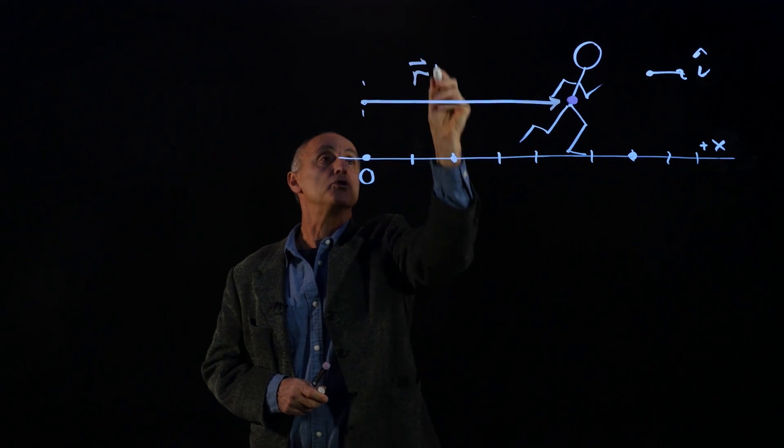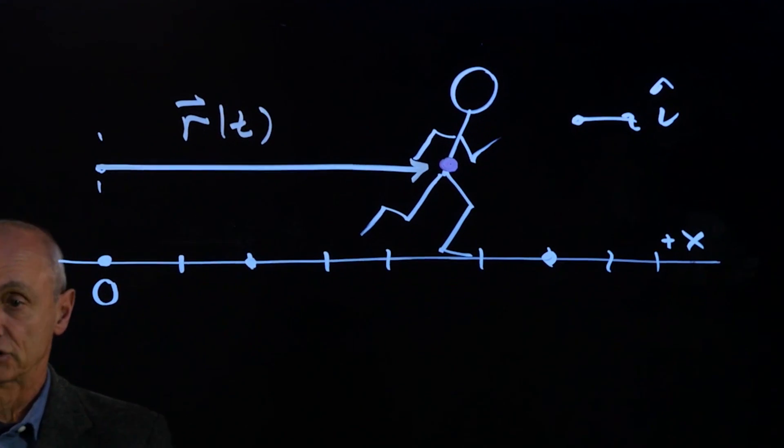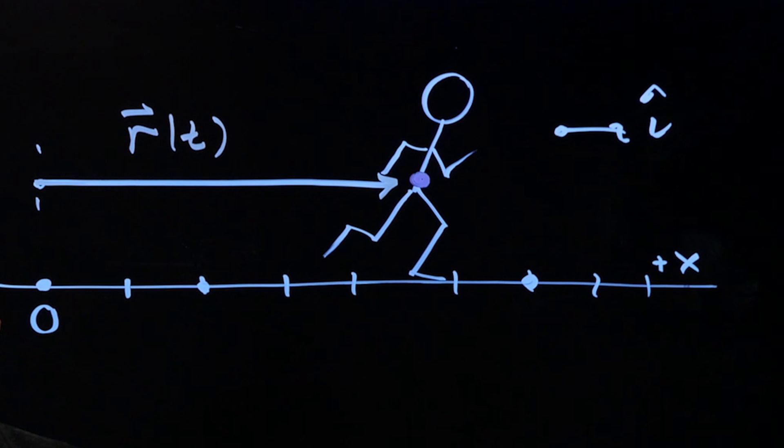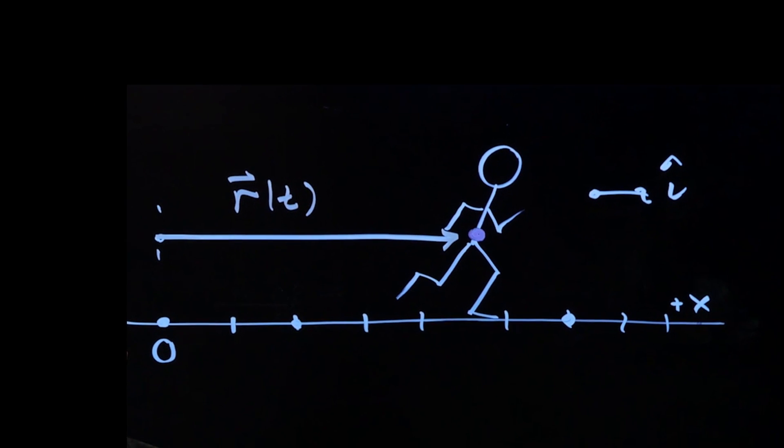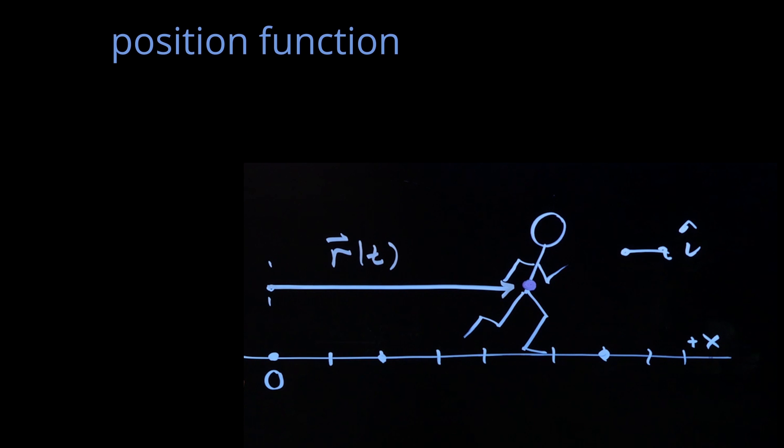And this is what we'll refer to as our position function. Now remember, every point here has an x coordinate. So we can now introduce our position function, which we'll call x of t, which is the coordinate location with respect to the origin.